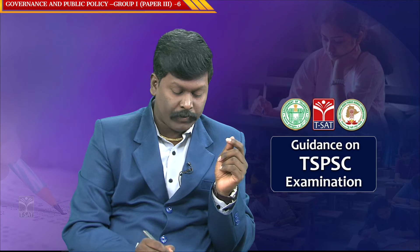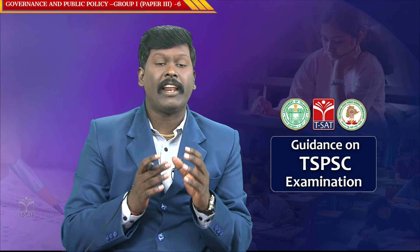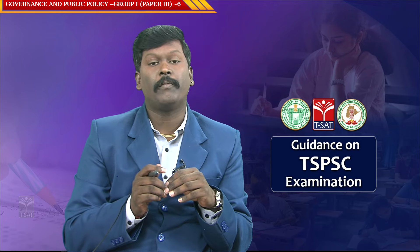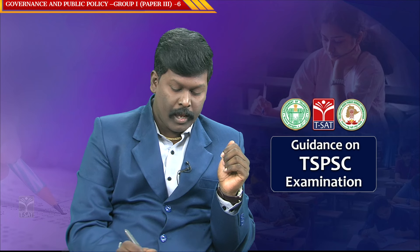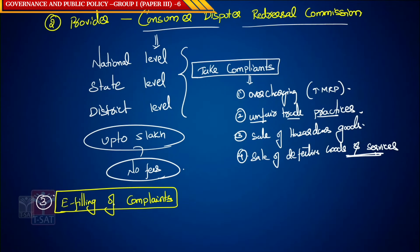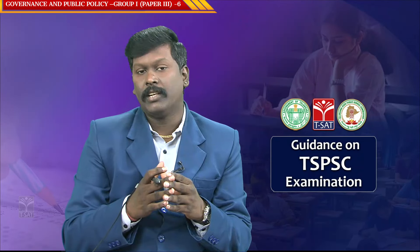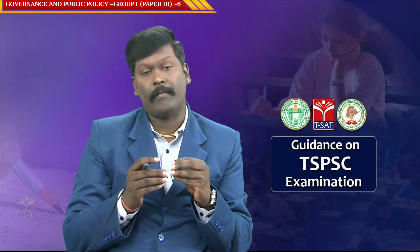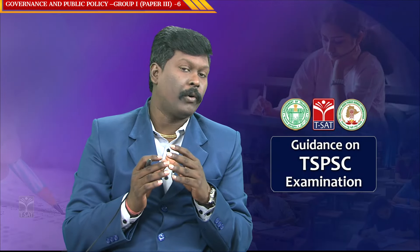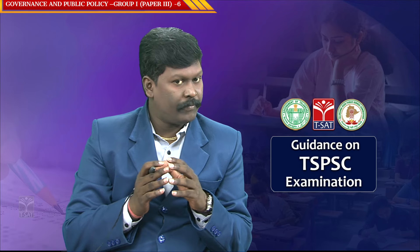The third salient feature of the Consumer Protection Act 2019 is e-filing of complaints. The act ensures that there is an online e-filing mechanism for complaints. Whenever any consumer goes to the website and files a complaint, there is no need for an attorney or advocate. This is the biggest change brought by the Consumer Protection Act of 2019.